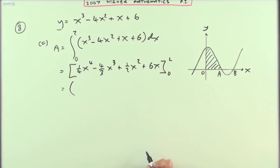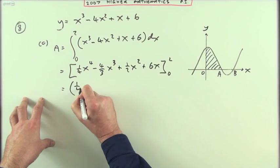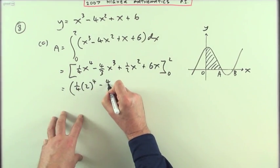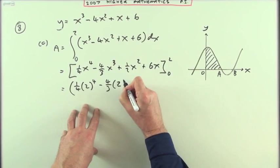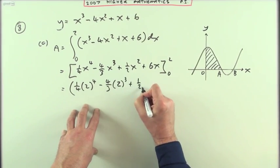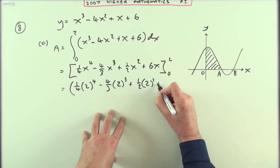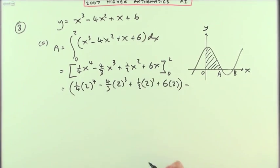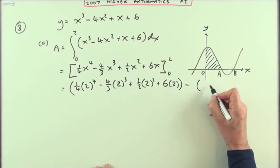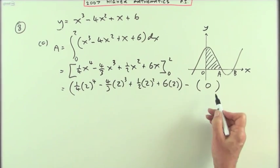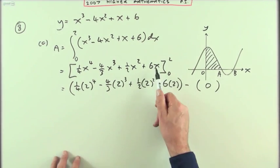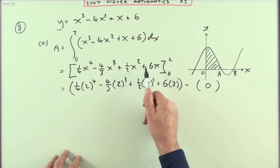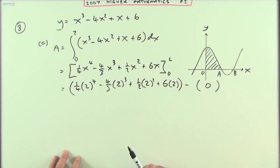Now the tedious bit, all the substitutions. A quarter of 2⁴, 4/3 times 2³, a half of 2², and 6 times 2, minus—and the rest of these are all going to be zeros so I'm just assuming it's safe just to put zeros in. Don't be too hasty putting the zeros in. It's okay in this case because they're just separate x's in all the terms.